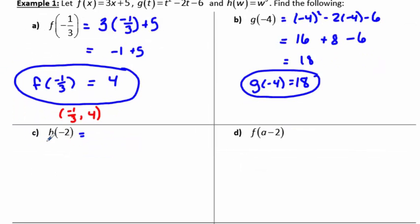In part c, we want to find h of negative 2. We're going to plug negative 2 into the function h for the variable w, since w is the input. And so we're going to come out with negative 2 cubed, which is negative 8. So h of negative 2 is negative 8.